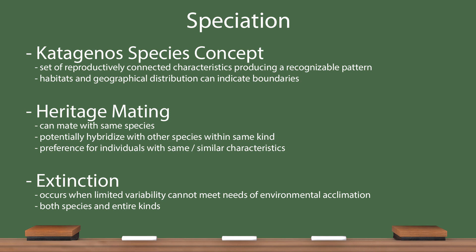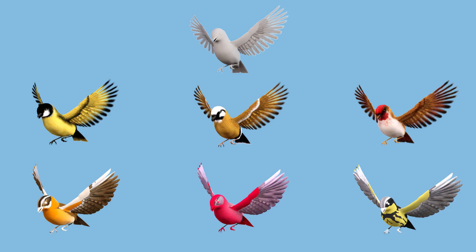If all species within a kind go extinct, the entire kind is then lost. Our computer bird kind seen at the top is expected to speciate over time, such as these six examples here. Each bird would prefer to mate with its own species, but should be able to mate with any of the other bird species represented here.